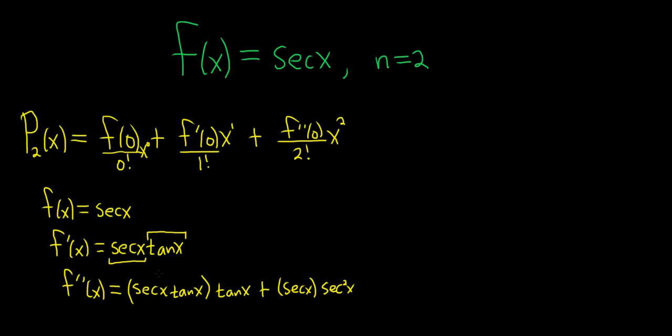Let's just double check our work. So the derivative of secant is secant tangent. That's the derivative of the first times the second, plus the first times the derivative of tangent, which is secant squared. Things look pretty good.